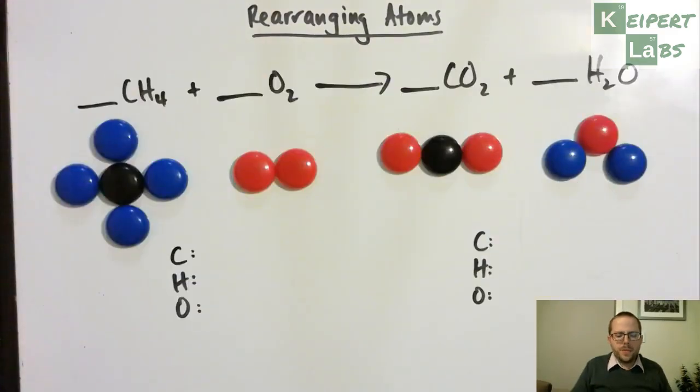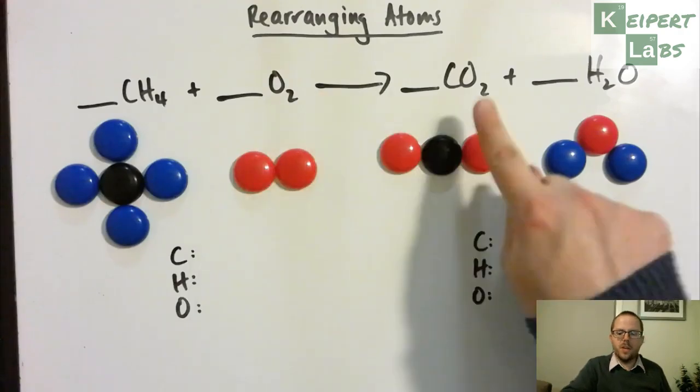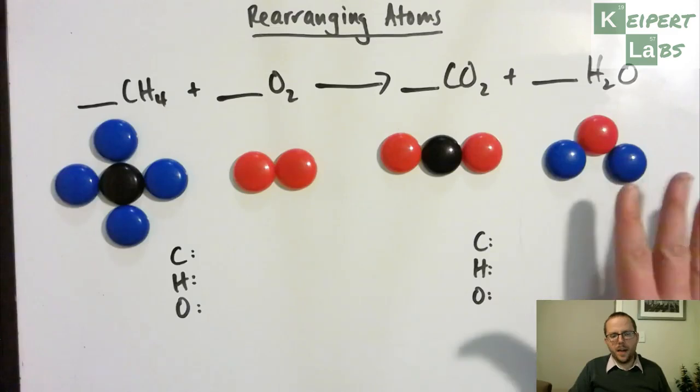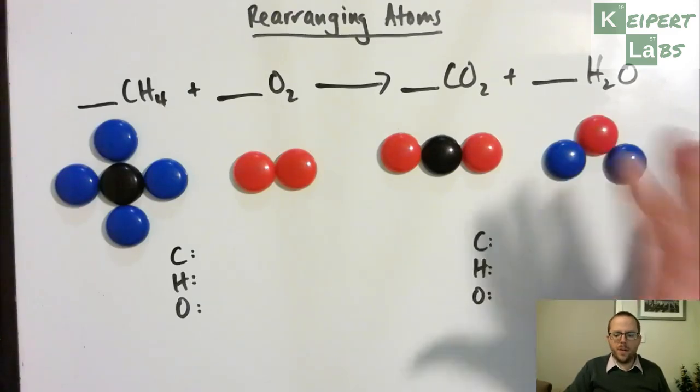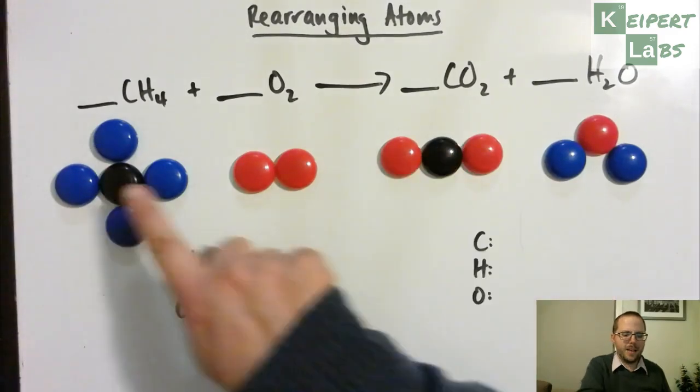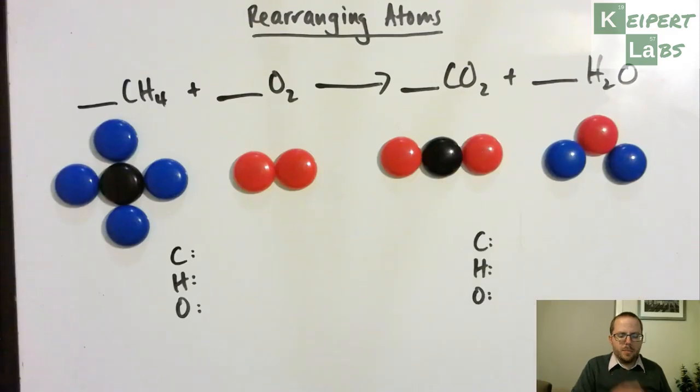This one's an equation for the combustion or the burning of methane, which is CH4. So burning in the presence of oxygen, forming carbon dioxide and water. So I've set out the color scheme or the kind of pattern that I'm going to use. I'm going to stick with the same sort of arrangements that I've used before. This time I'm using black to represent carbon. So blue for hydrogen, red for oxygen.